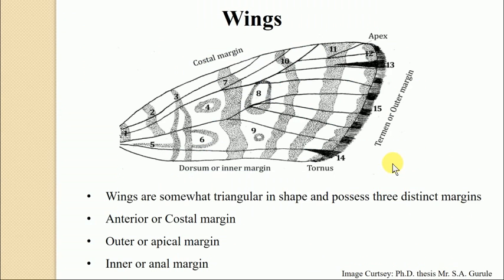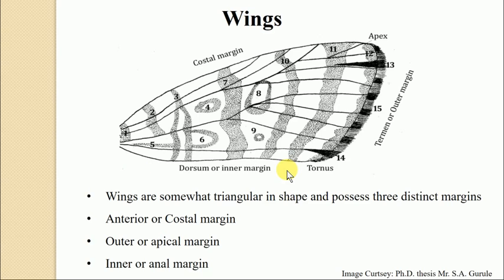Before we start, we have already learned that the wings of an insect are somewhat triangular in shape and possess three distinct margins. The anterior margin is also referred to as the costal margin, as the costal vein is present at the anterior side. The second margin is referred to as the outer margin, also referred to as the apical margin or 'termine' in some insects, representing the outermost part of the wing.